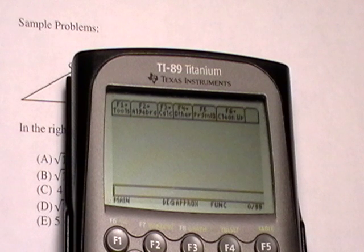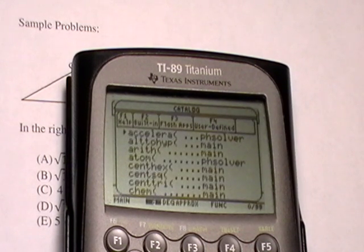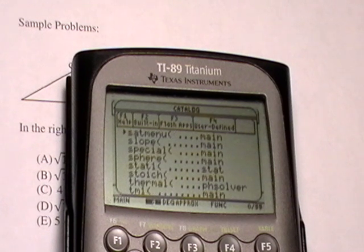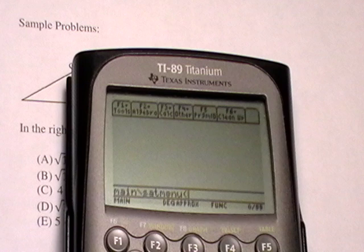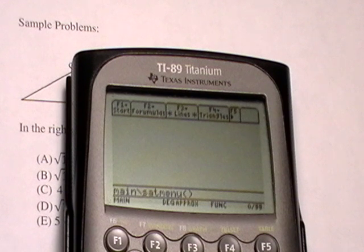The first thing you want to do is hit catalog, then F4, then the 3 key because that stands for S. We're going to launch the SAT menu program, hit enter, close the parenthesis, hit enter again. That will start the operating system.